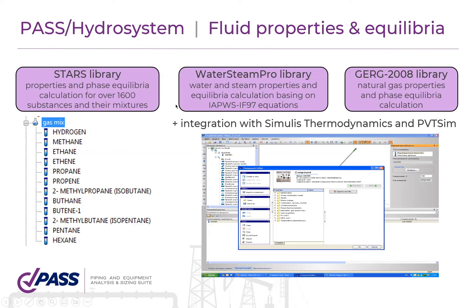We have a lot of built-in thermodynamic libraries that allow you to calculate fluid properties and phase equilibrium — for example, for flashing or cavitating flow. We have the STAS library containing over 1,600 different substances and their mixtures. We have the Water-Steam-Pro library for precise calculation of water and steam properties and phase equilibrium, and the GRG 2008 library for natural gas properties. We also have the ability to integrate Hydra System with Multiflash thermodynamics and PVT-Sim for substances beyond our built-in libraries.